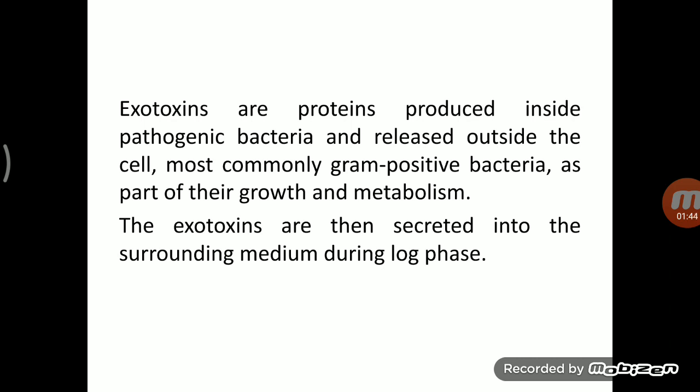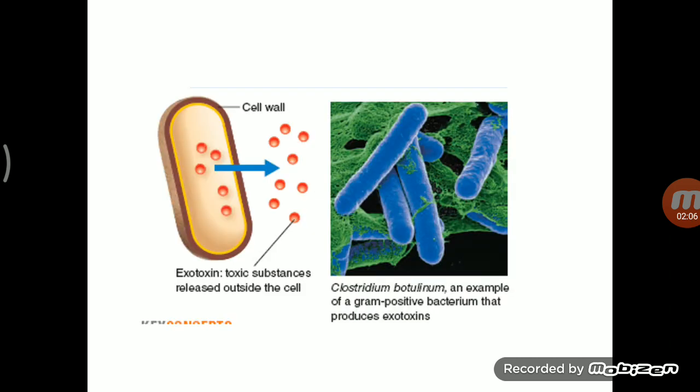Exotoxin is a protein produced inside pathogenic bacteria — production happens inside the cell, and then it is secreted or released outside the cell. The majority of gram-positive bacteria produce exotoxin. Exotoxins are secreted into the surrounding medium during the log phase, which is one of the four bacterial growth phases: lag, log, stationary, and death phase.